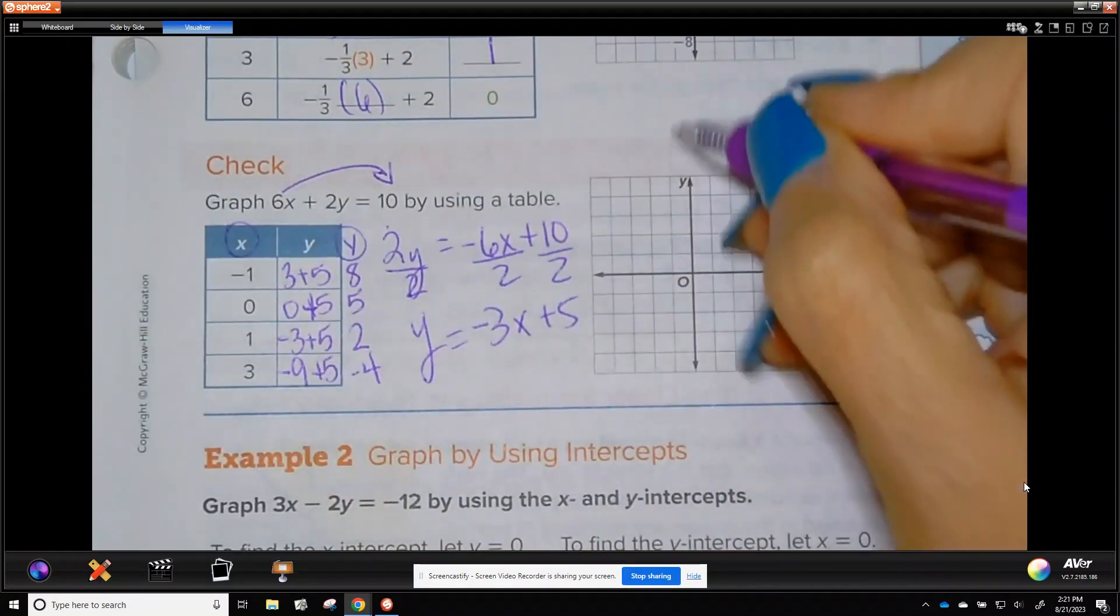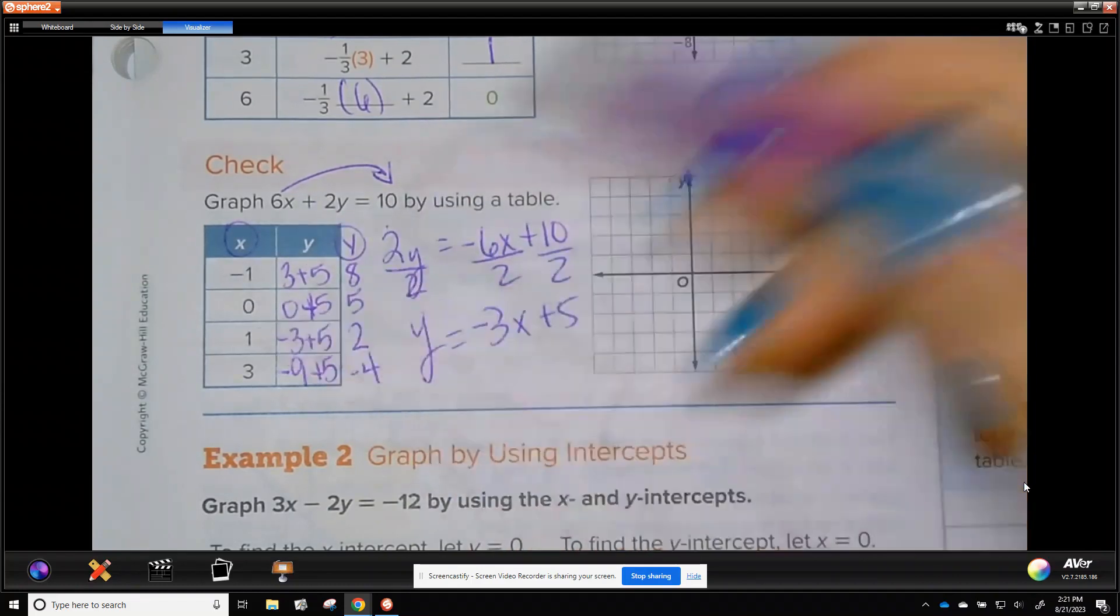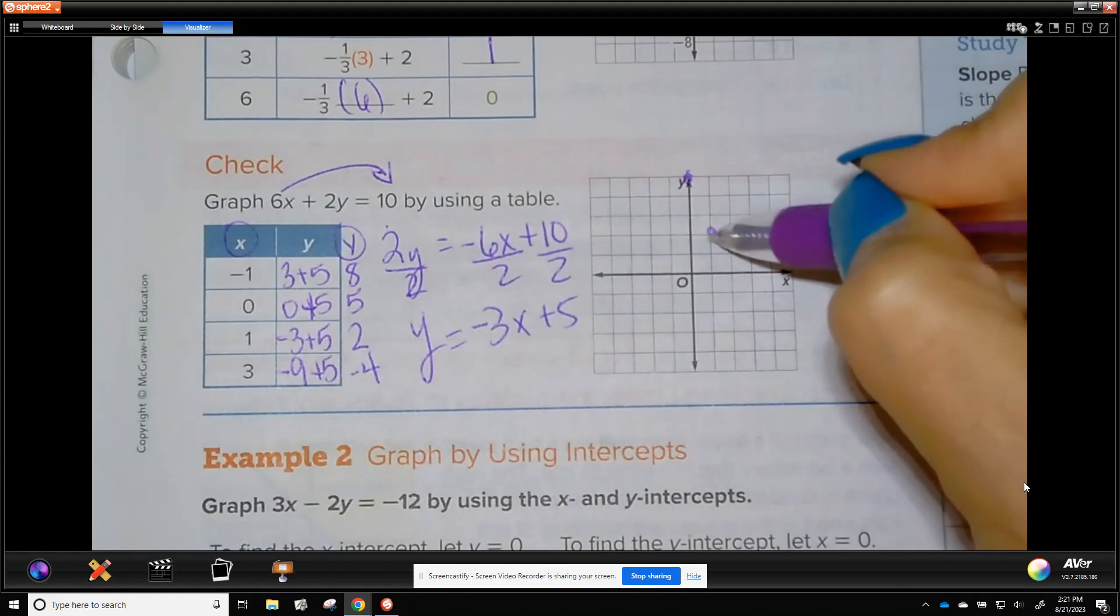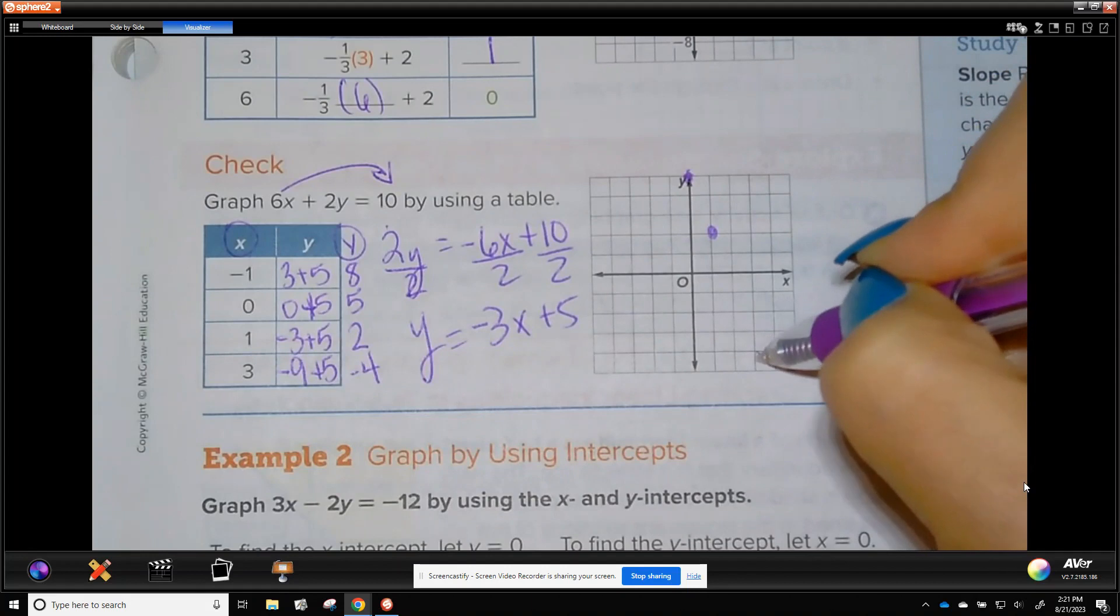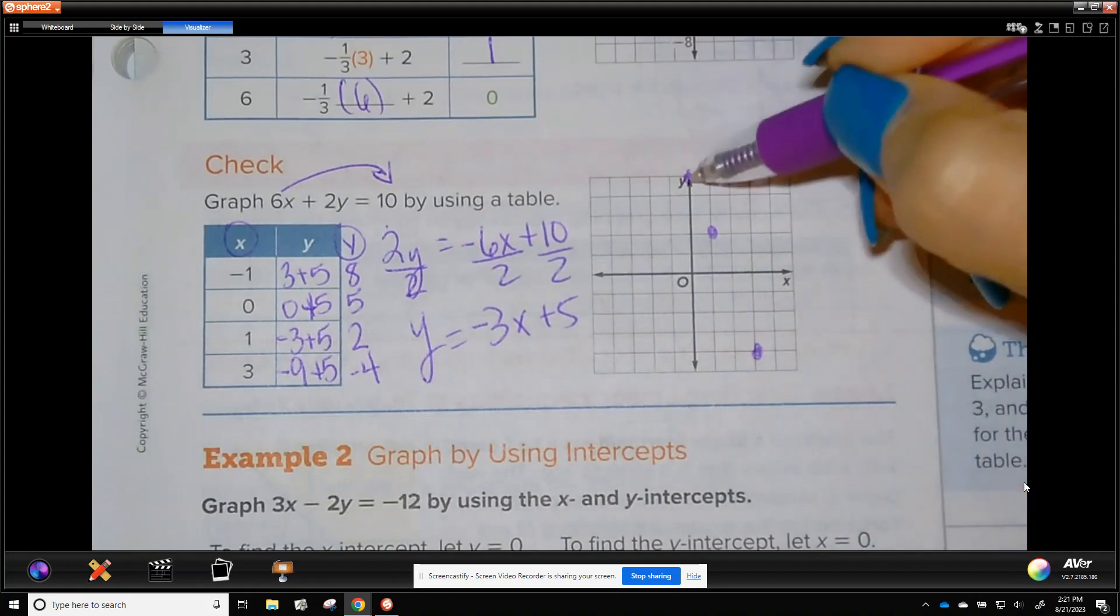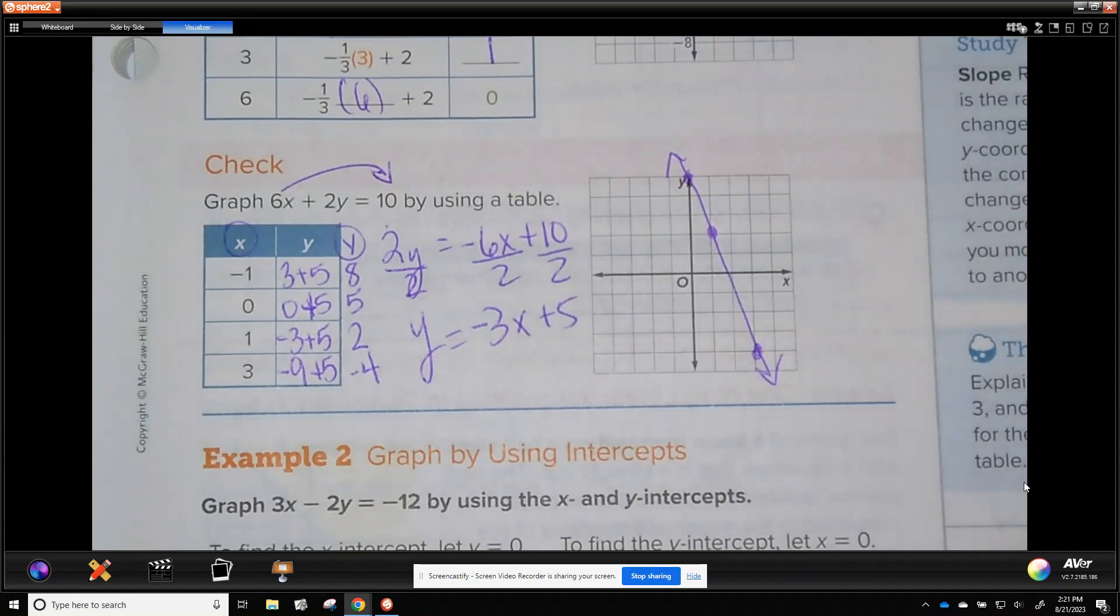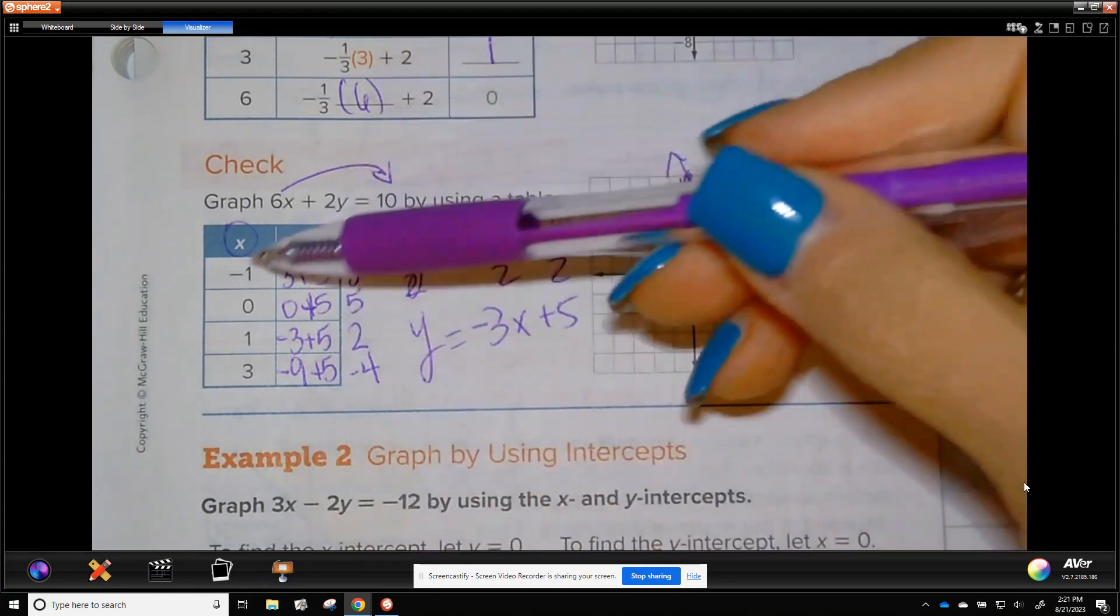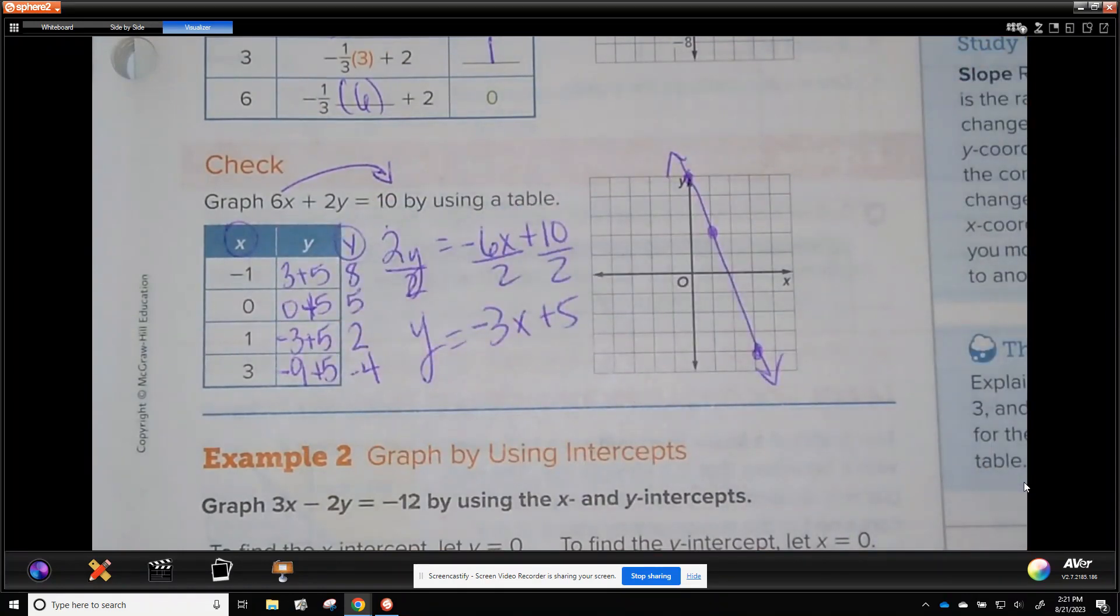So we're going to plot these values. At negative 1, we are at 8, which is way up here. 0, we're at 5. 1, we are at 2. And 3, we are at negative 4. 1, 2, 3, 4. So there is our line. We know these are lines and not any shading because it is equal to. So that's with a table. If you want to fill out a table, I would say always have some negative values, some positive, and 0. 0 is just the easiest to plug in usually.